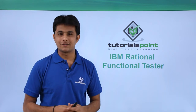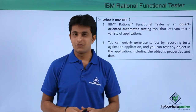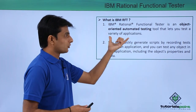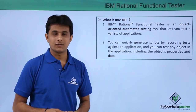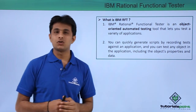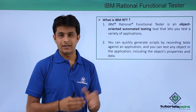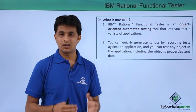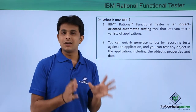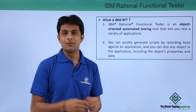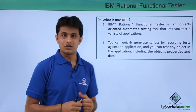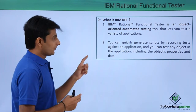IBM Rational Functional Tester is an object-oriented automated testing tool that lets you test a variety of applications. It is a functional regression testing tool — functional meaning you check the functionality of the application, like radio buttons, text boxes, and checkboxes. Regression means changes made in one module might impact other modules, so RFT helps prevent that.